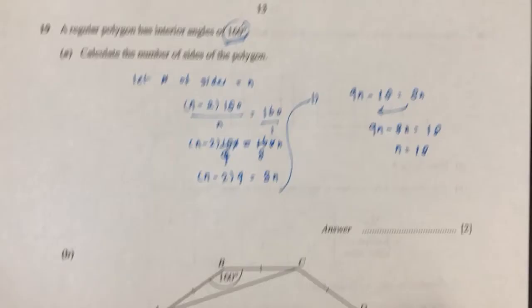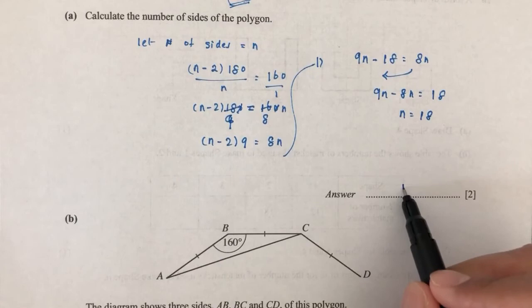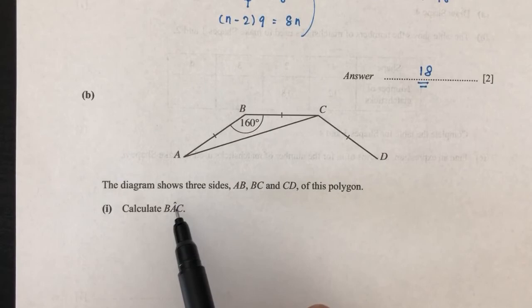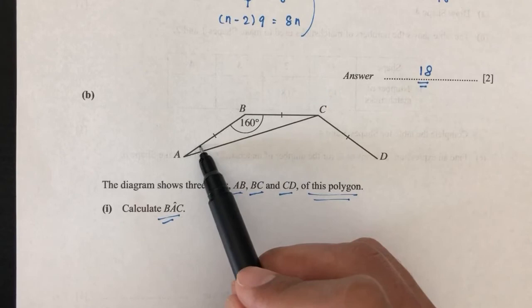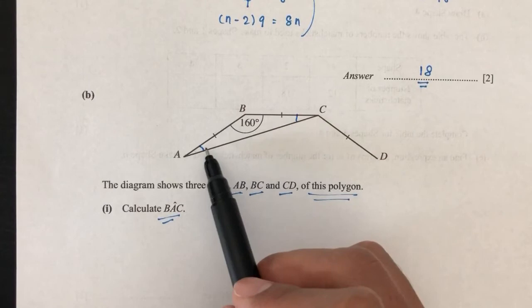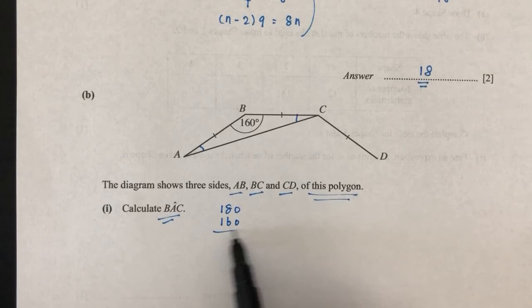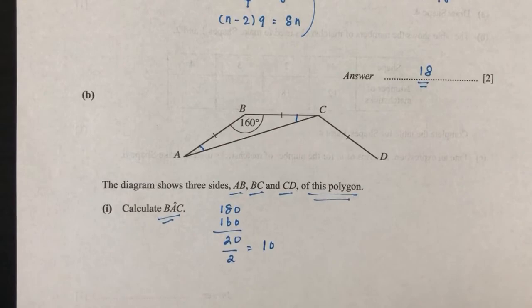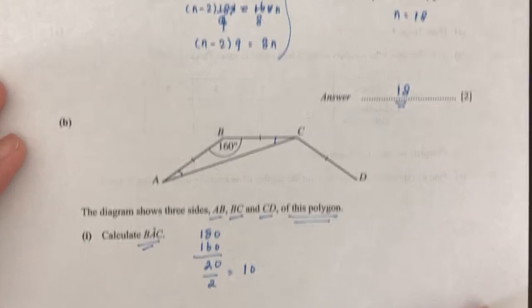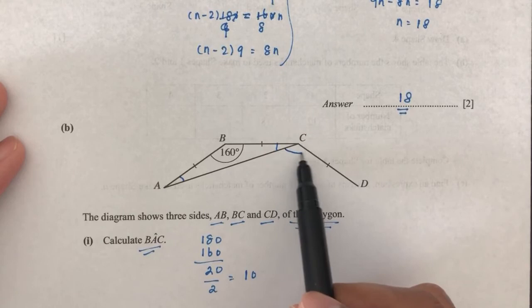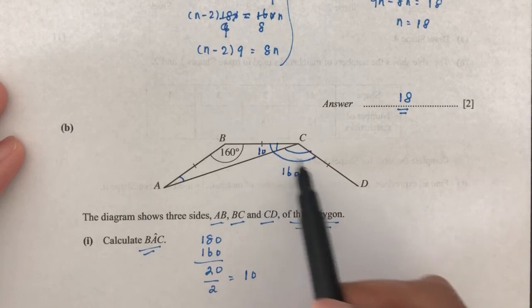For part B, three sides AB, BC, and CD of the polygon are shown. Calculate angle BAC. The interior angle is 160 degrees, so the triangle ABC has a remaining angle of 180 minus 160 equals 20, divided by 2 gives 10 degrees for angle BAC. For part 2, calculate angle ACD: the interior angle is 160 and angle BAC is 10, so angle ACD is 160 minus 10 equals 150 degrees.